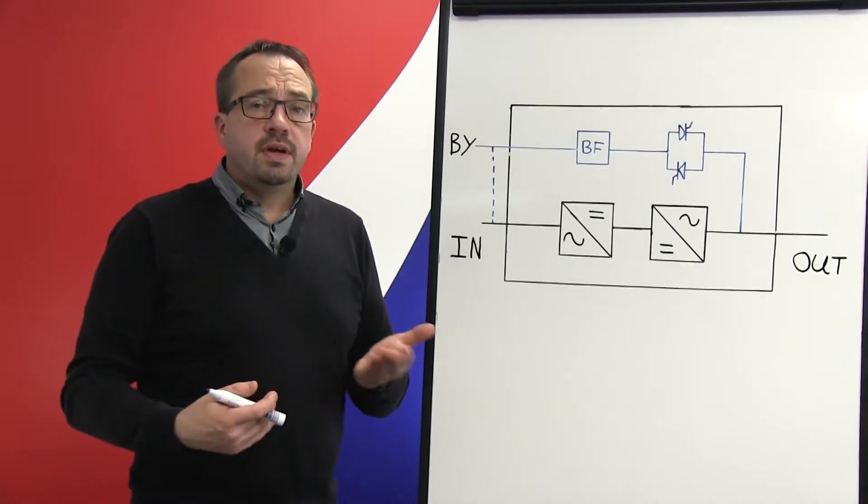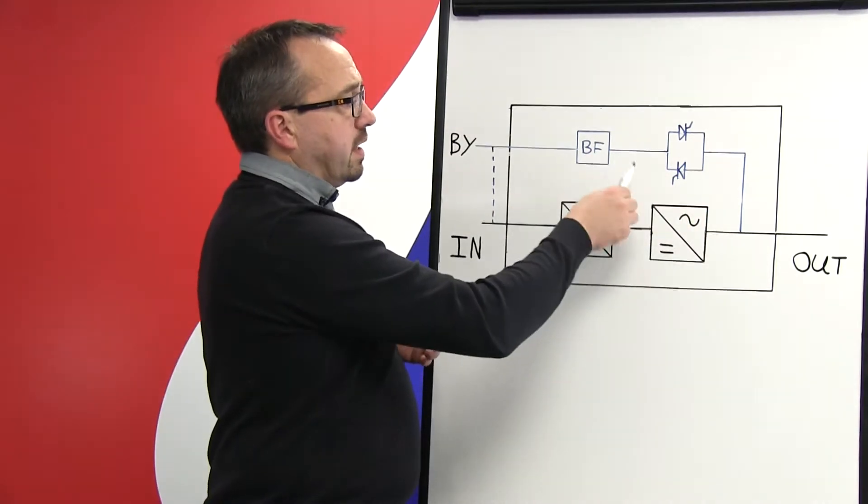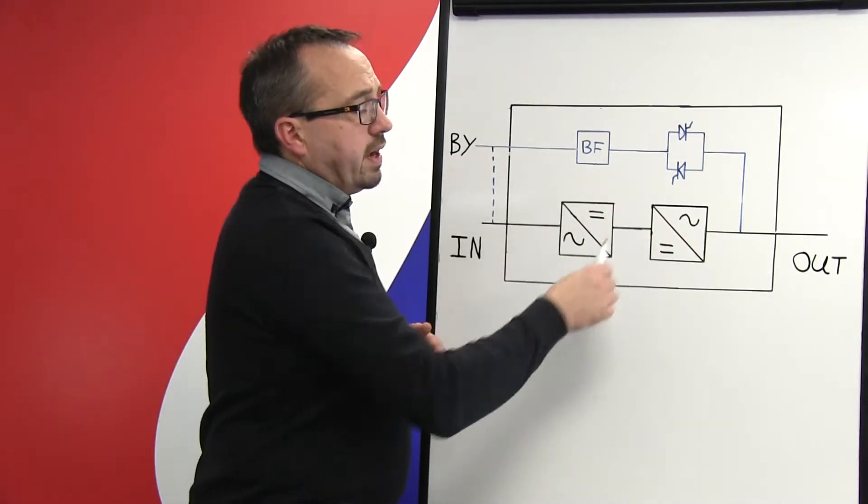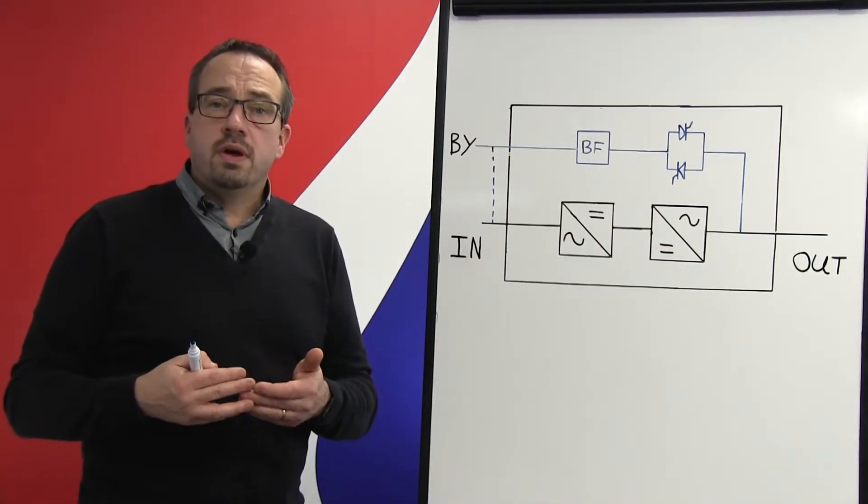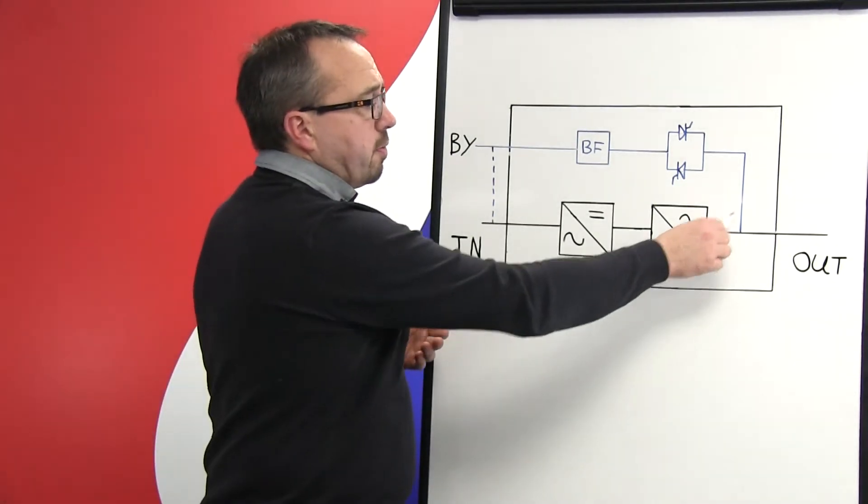Now the reasons that can cause the UPS system to automatically transfer the load from the inverter onto the bypass line include if the inverter or the rectifier were to fail, or there was a problem with the controlling architecture within the UPS system which meant that the output voltage waveform from the UPS was having a problem or was beginning to collapse.